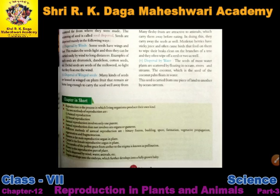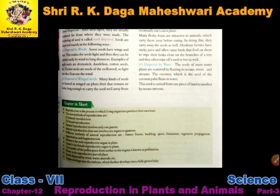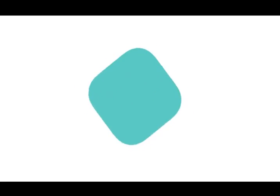We have also discussed pollination — pollination ek important factor hai for reproduction in plants — including self-pollination and cross-pollination. That's all for today's class students. In our next class we are going to start a new chapter. Thank you.